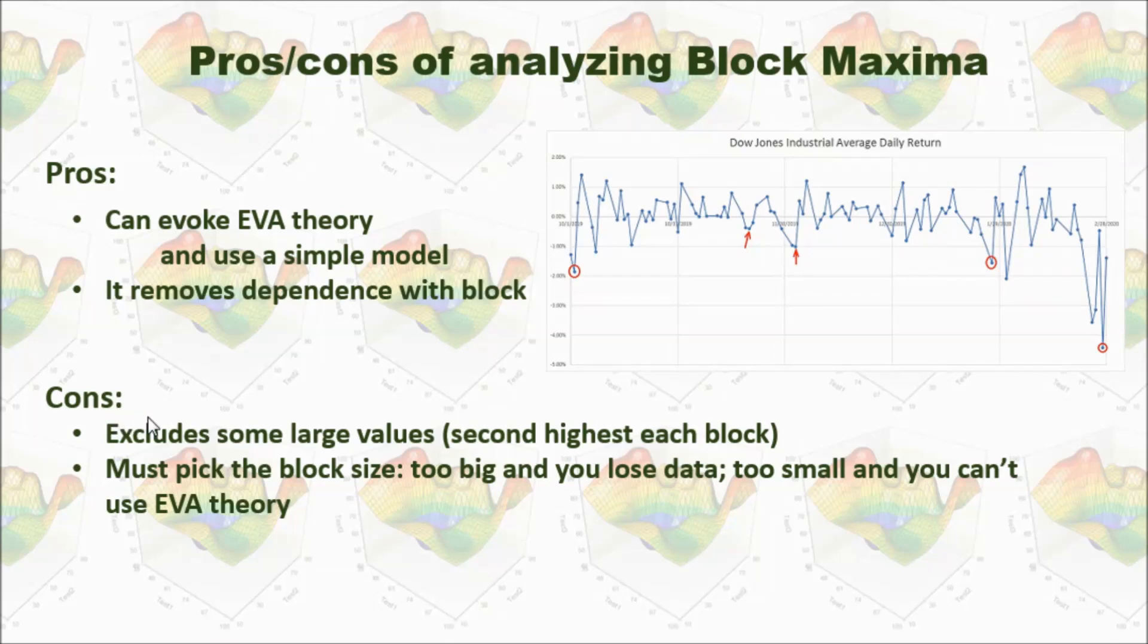The cons are, it excludes some large value. For example, there are several large values inside this same month. But because we only pick up one value from one month, we just ignore that second highest value.